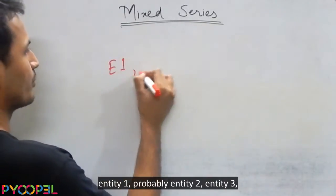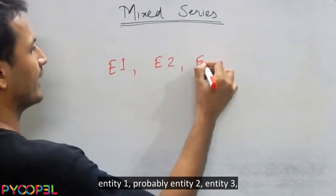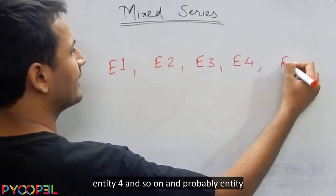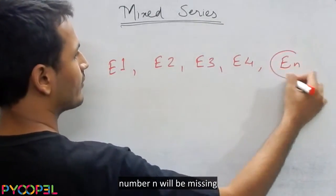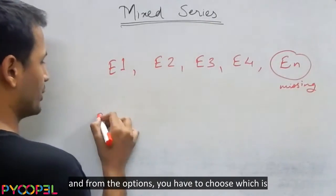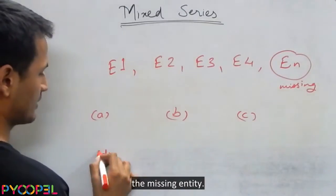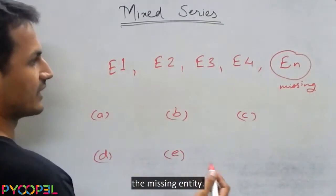So you will have entity 1, probably entity 2, entity 3, entity 4 and so on, and probably entity number n will be missing. And from the options you have to choose which is the missing entity.